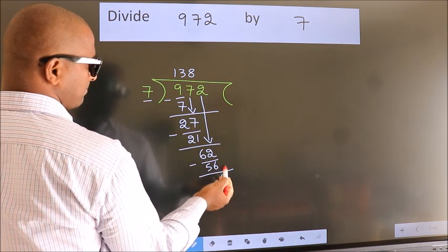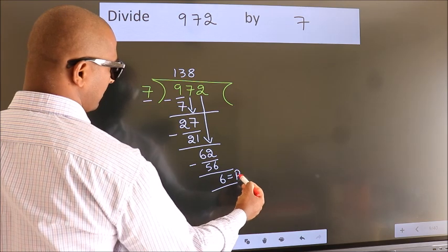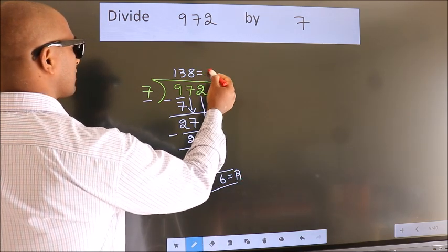No more numbers to bring it down. So we stop here. This is our remainder. This is our quotient.